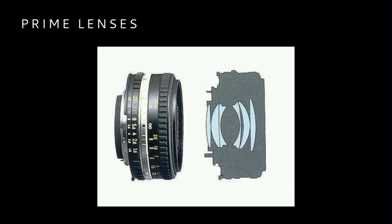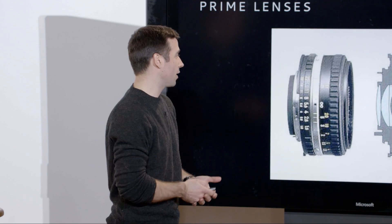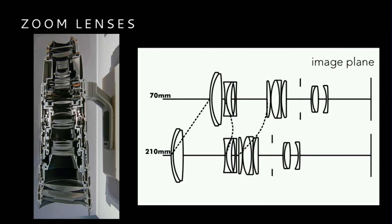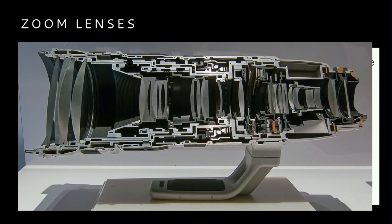Prime lens construction is pretty simple — inside we have a couple of lens element groups that move when you turn the focus ring to bring your image into or out of focus. A zoom lens is more complicated. Looking at this cross section, you've got multiple lens groupings that move to zoom your image in or out and also change focus. Look how many lenses and moving parts there are — it's pretty crazy.